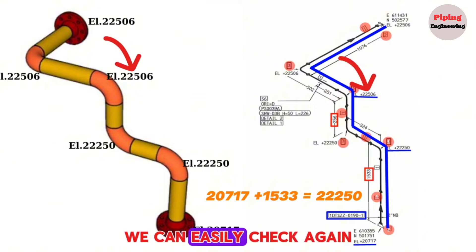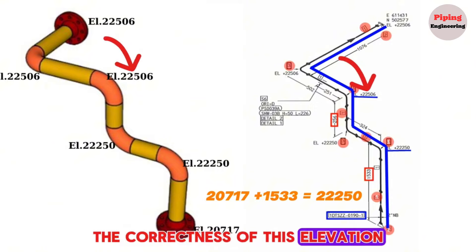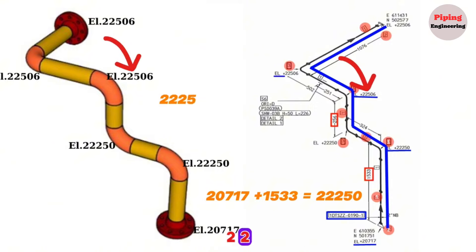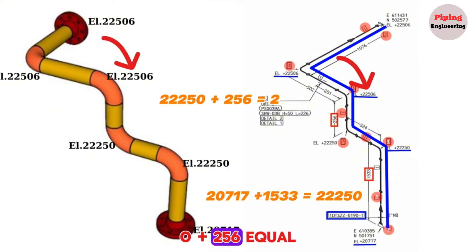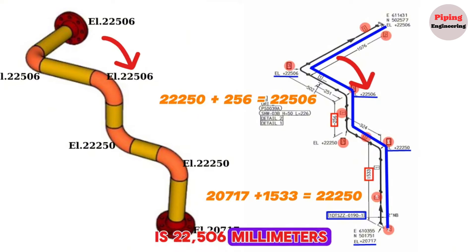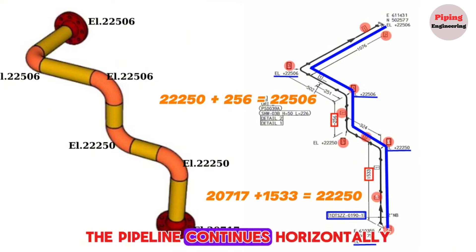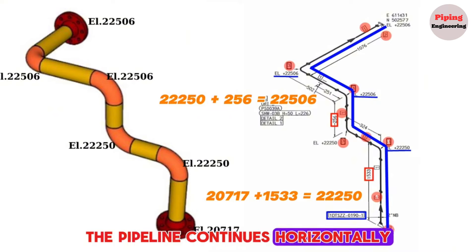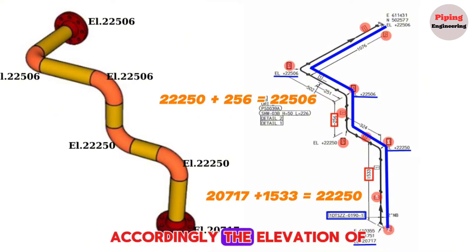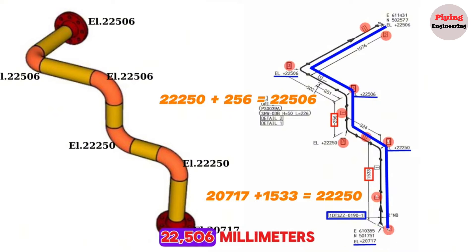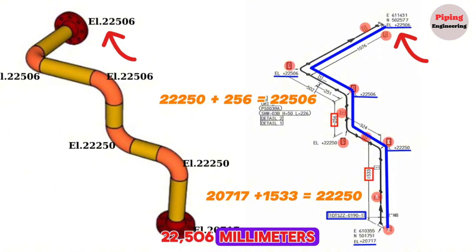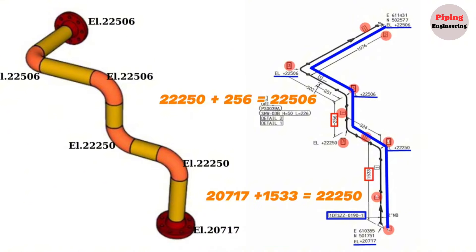We can easily verify the correctness of these elevations. 20,717 plus 1,533 equals 22,250 millimeters, and 22,250 plus 256 equals 22,506 millimeters. After this elevation, the pipeline continues horizontally, so the elevation of the last point will also be 22,506 millimeters.